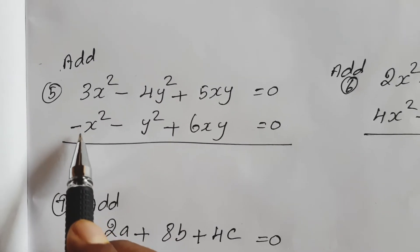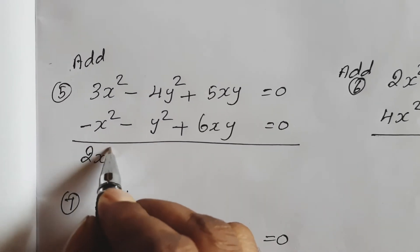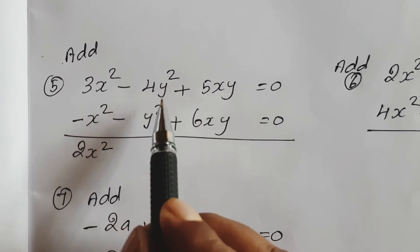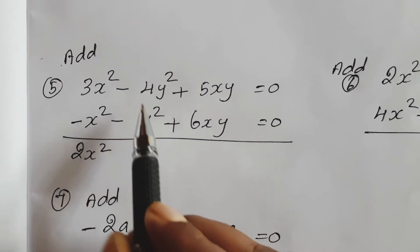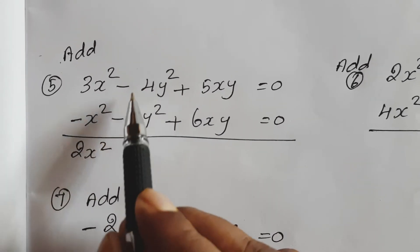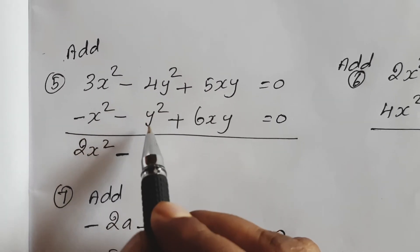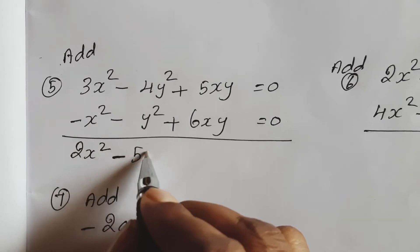3 minus 1, so negative 2x². Here minus 4y² plus minus y². Both are same sign, negative sign. So 4 plus 1, 5, 5y².